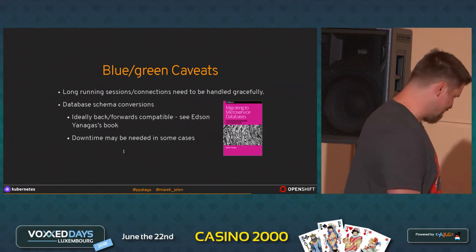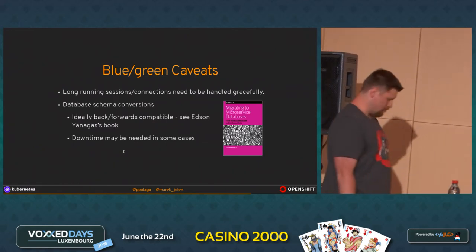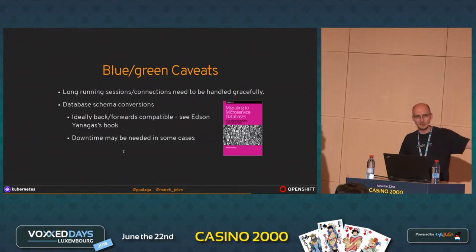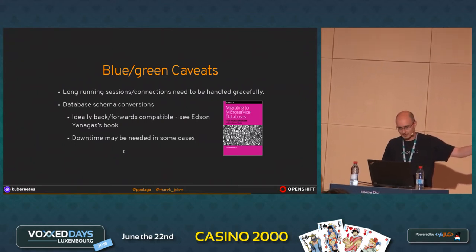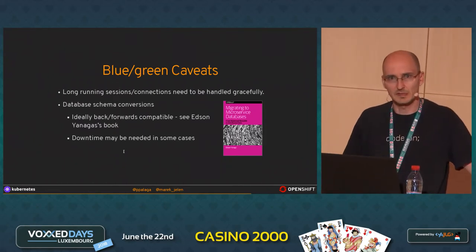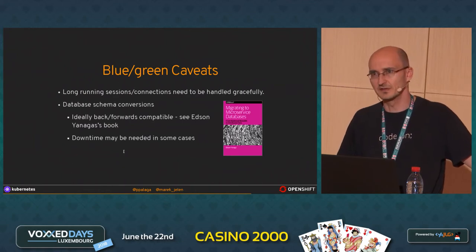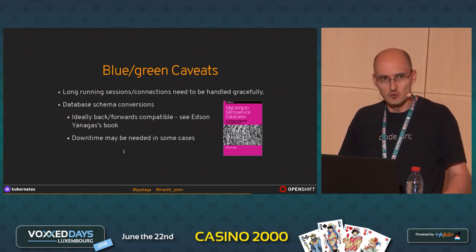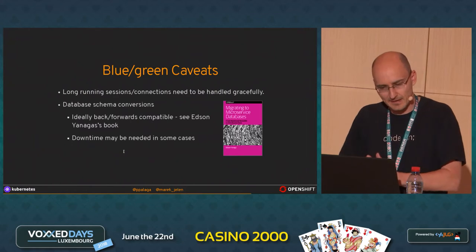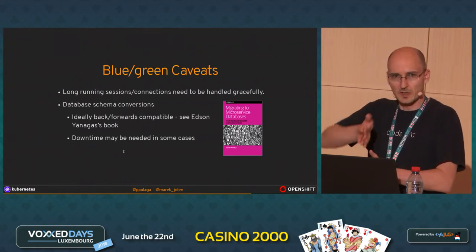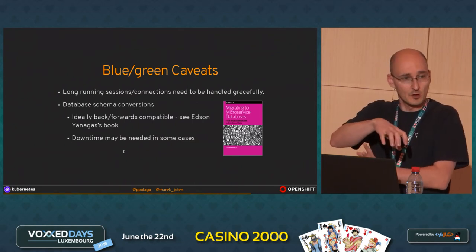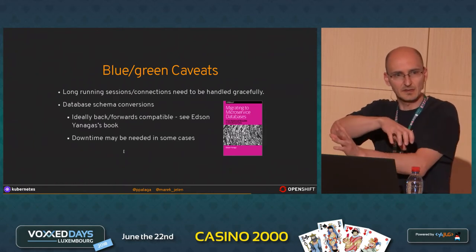Funny enough, it is actually possible to do database evolution of the database schema using backward and forward compatible changes. There's a very good book written on the subject by a colleague, Edson Yanaga — if you ever hit this issue, you should read the book. There are very nice examples and strategies about exactly how to evolve your database schema in steps so that at every point it's possible to roll back to the previous stage and the old application can still communicate.